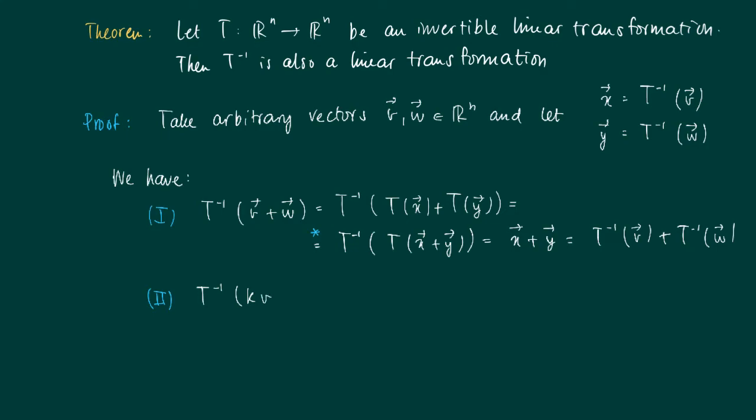Now we have to prove the second one: that the inverse of a scalar K times a vector V equals K times T inverse V. We are going to do it in the same fashion, so we still know that V equals T times the transformed vector X. And now we use the property here again, a linear transformation T, so K times T(X) equals T times K(X).